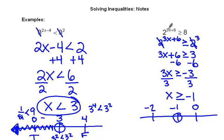If you plug in negative 2, you get negative 6 plus 6 is 0. So, you get 2 to the 0 is greater than or equal to 8. And if we use our 0 exponent rule, we know that 2 to the 0 is 1.